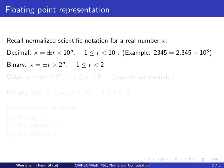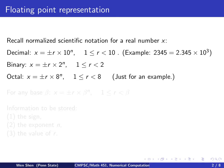If this shall be a binary number, you can do a similar thing. It will equal plus or minus r times 2 to the power n, where 2 is the base. So r will take a value between 1 and 2, strictly less than 2 — so it will be one point something. For an octal number, you change the base to 8: plus or minus r times 8 to the power n, and r takes a value between 1 and 8, strictly less than 8.